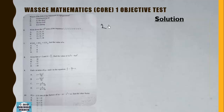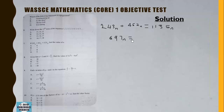We want to find the value of n such that 243 base n + 452 base n = 1135 base n. Adding digit by digit: 3+2=5, 4+5=9, 2+4=6, giving 695 base n = 1135 base n.